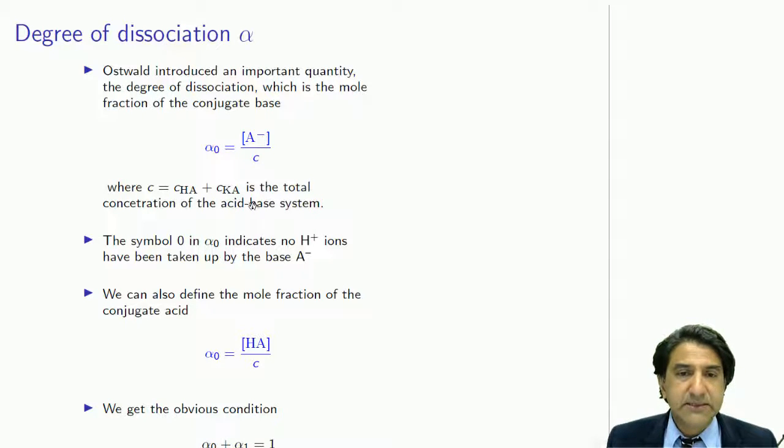So that's the degree of dissociation. The symbol 0 in alpha-0 is supposed to indicate that no H ions have been taken by the A- in solution. It's the anion plus 0 H plus ions.